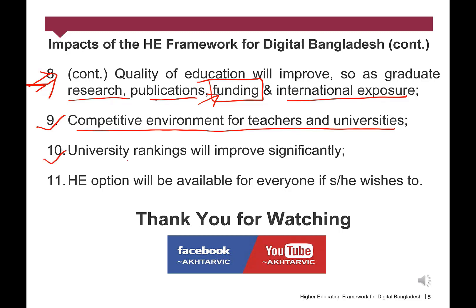Number 10: University Rankings will improve significantly. When the above tasks are considered and necessary actions are taken, our university rankings will improve gradually. We have many plus points: our manpower cost is low, undergraduate education quality is good, and teacher-student ratio is better. Now if we can look into international exposures in terms of both students and faculty members, as well as graduate research, publications and funding, obviously our university rankings will improve. So we have to act, and act soon, to capitalize in the higher education sector.